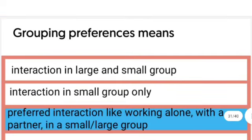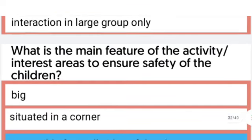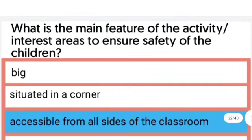Grouping preferences means preferred interaction like working alone, with a partner, in a small group, or in a large group. The next one: What is the main feature of the activity interest areas to ensure safety of the children?